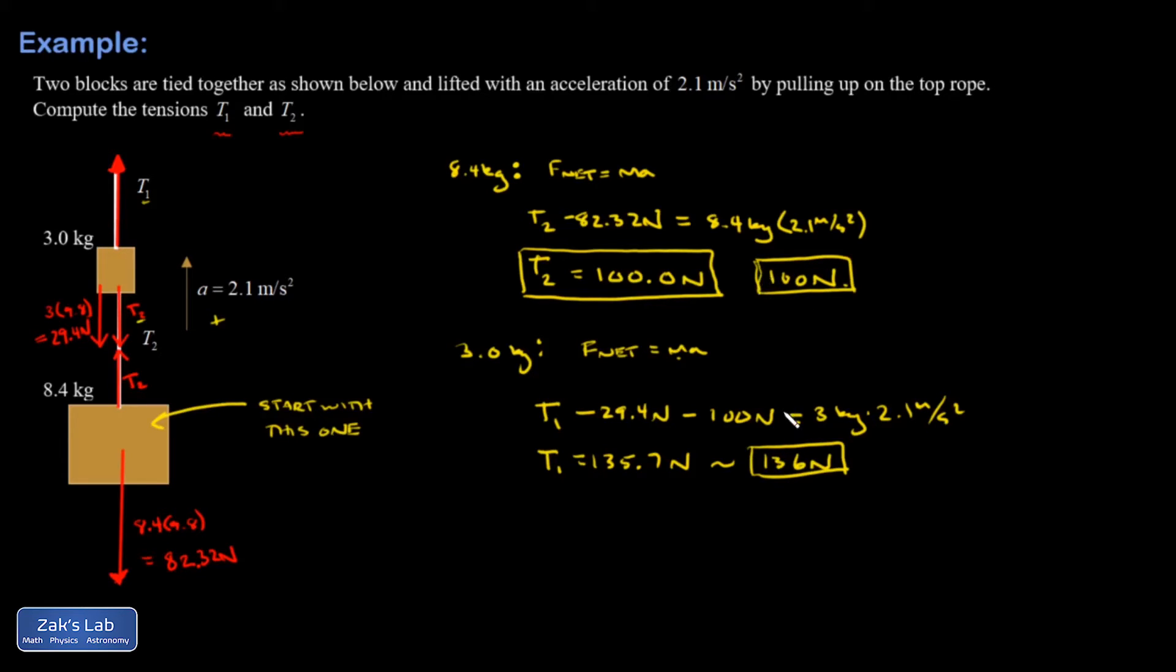There is an alternative strategy for solving this problem. The idea is that you can consider both masses together as a single mass of 11.4 kilograms. Then you ask yourself what's pulling on this 11.4 kilograms. I'm going to do this as a check on my work. I'm going to assume that T1 was the correct answer for the tension and then I'll calculate the acceleration and make sure it agrees.